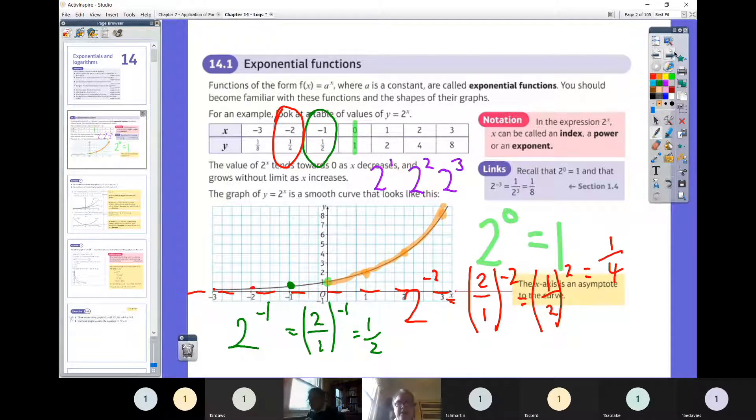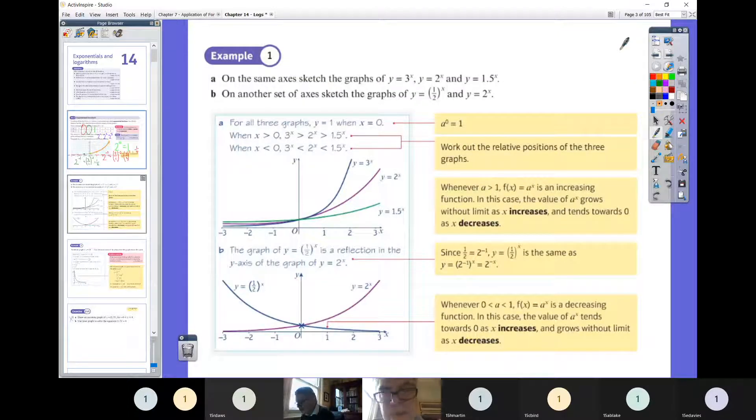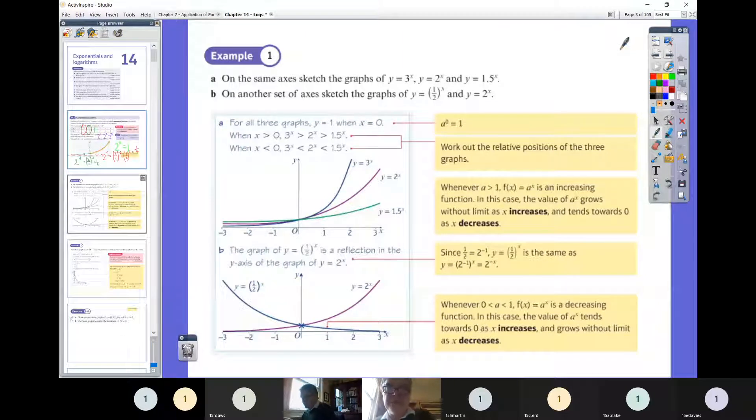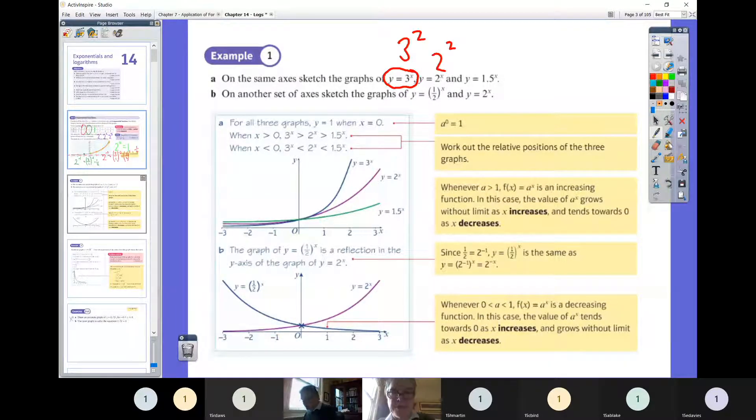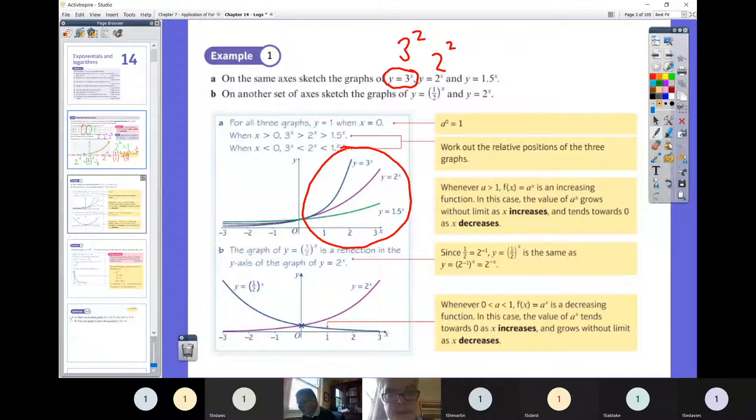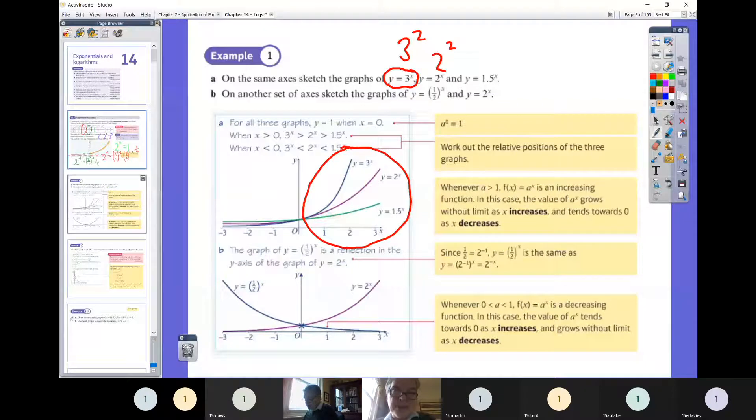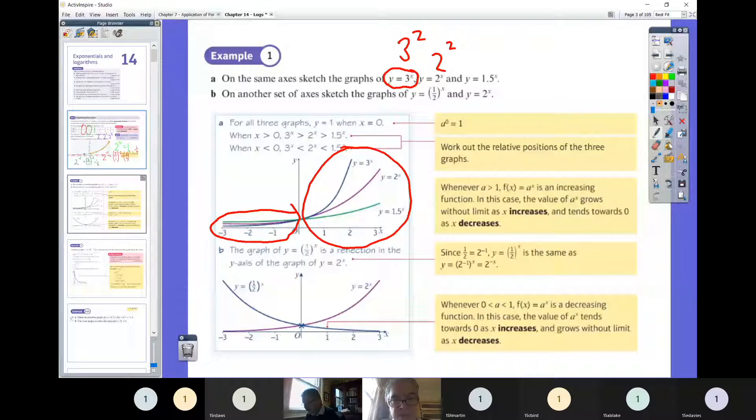Here we're comparing some of these graphs. As the base number gets bigger, so y equals 3 to the power of x, on the right hand side it's going to get steeper faster. Because 3 squared is bigger than 2 squared. It's no surprise on the right hand side that the bigger the base number, the steeper it gets. Also on the left hand side, the bigger the base number, the quicker it starts approaching zero. That blue line, as you go on the left hand side, is the lowest of those three. That green line is the highest.